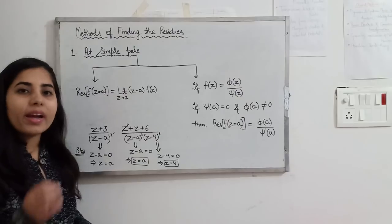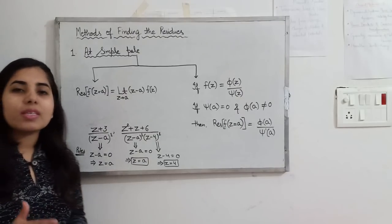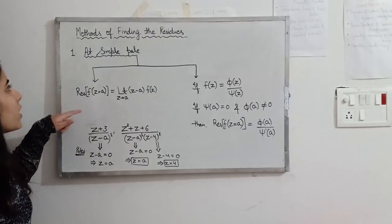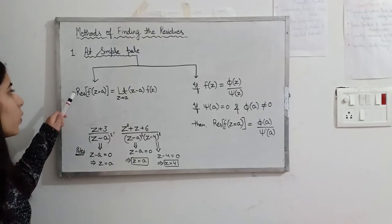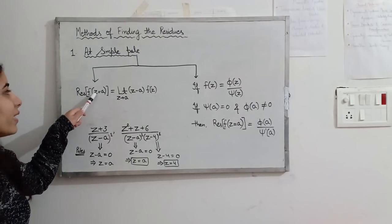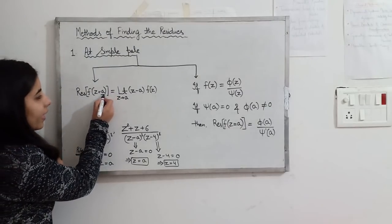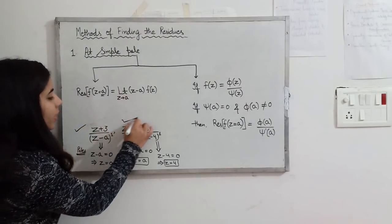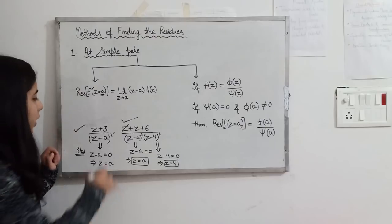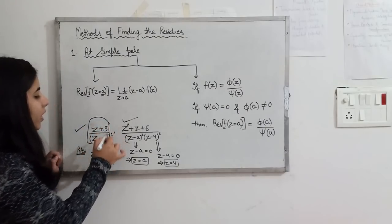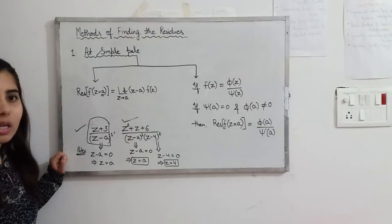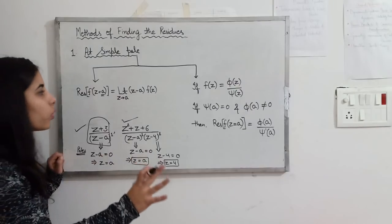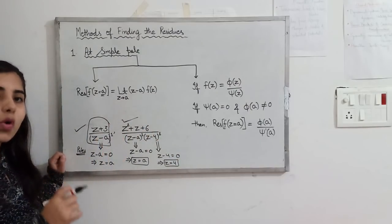We are going to talk about residues — how to find the residue at a simple pole. So to find the residue at a simple pole, the residue of function f at z = a, where z = a is a simple pole. For example, consider a function f(z) = (z+3)/(z−a). This is the function of z.